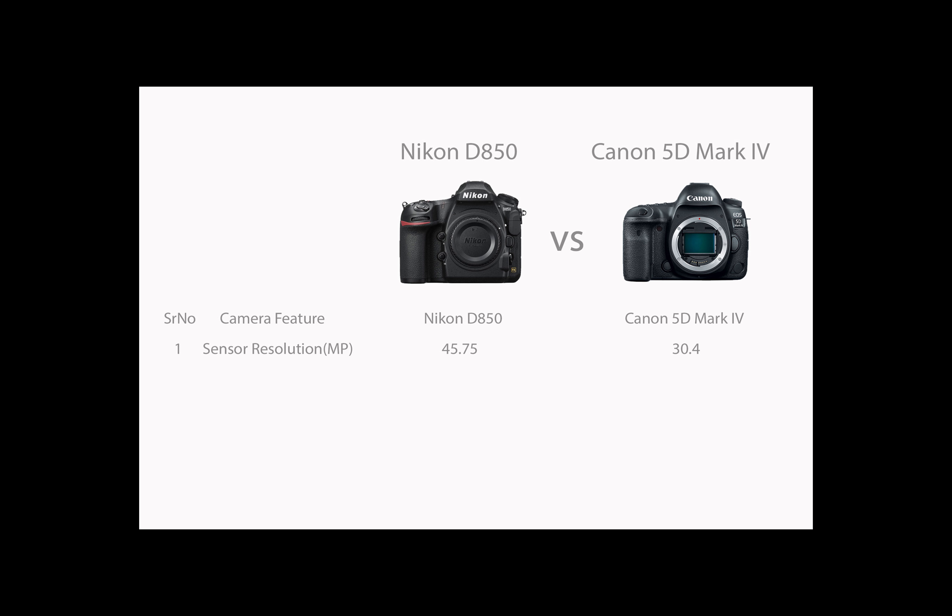Nikon D850 has a sensor resolution of 45.75 megapixels, whereas the sensor resolution of Canon 5D Mark IV is 30.4 megapixels. The Nikon D850 has significantly higher resolution and better color depth and dynamic range, which helps in capturing more details in your photographs compared to Canon 5D Mark IV.